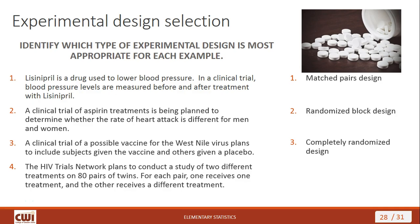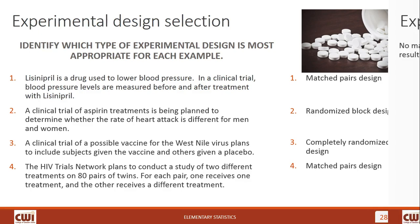Last example: the HIV Trials Network plans to conduct a study of two different treatments on 80 pairs of twins. For each pair, one receives one treatment and the other receives a different treatment. This is an example of matched pairs design. You've got two different treatments conducted on twins. The twins make matched pairs because one is receiving one treatment and the other is receiving the other, and the connection between them is that they're identical copies of each other.